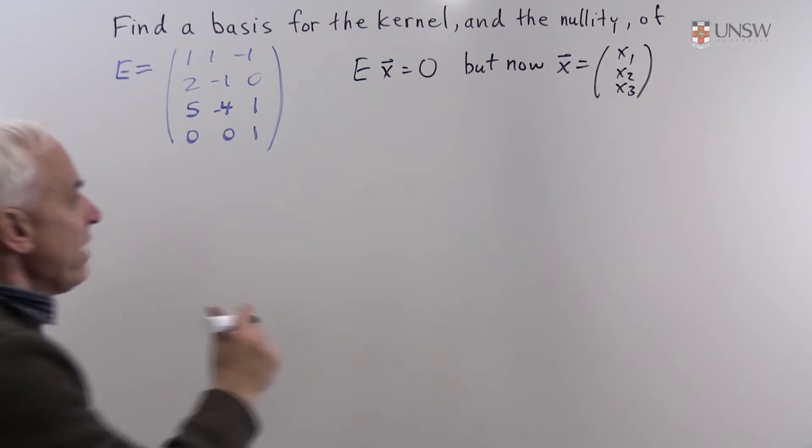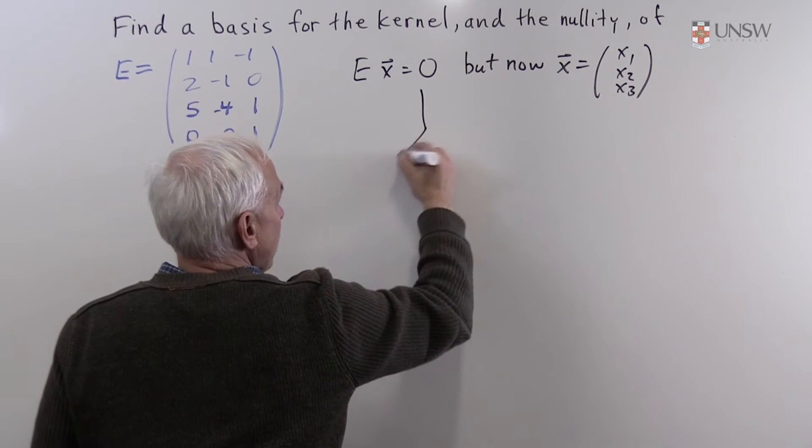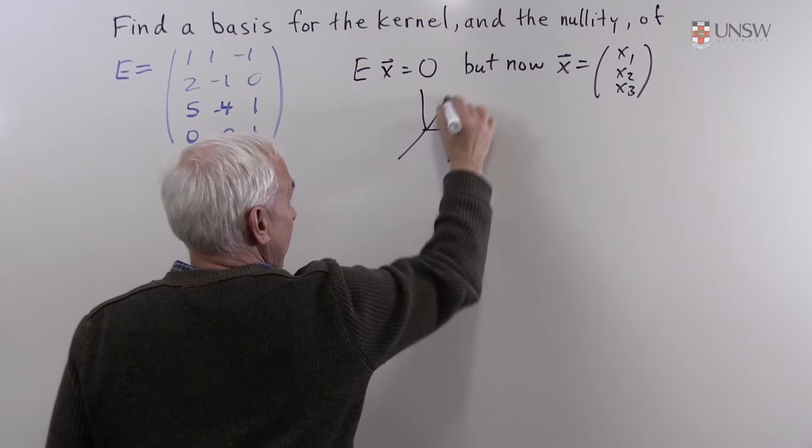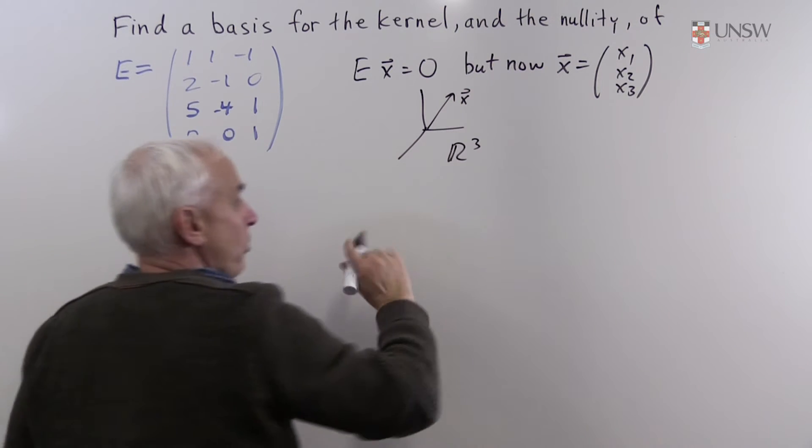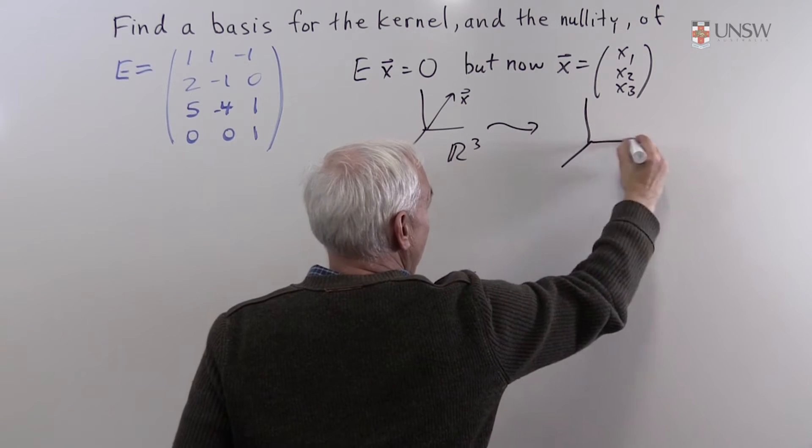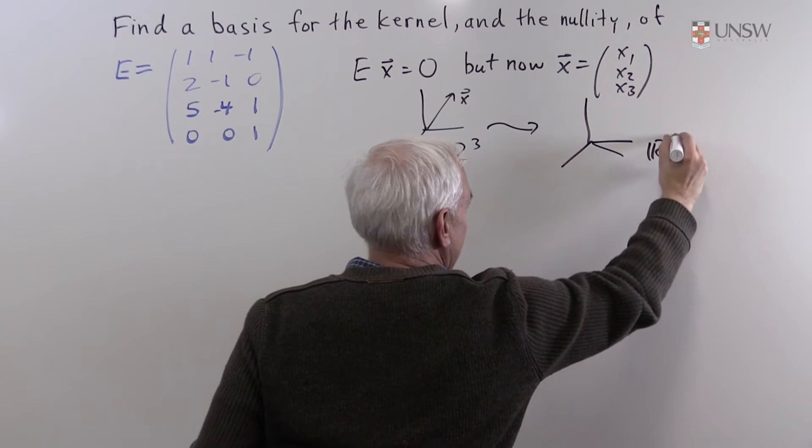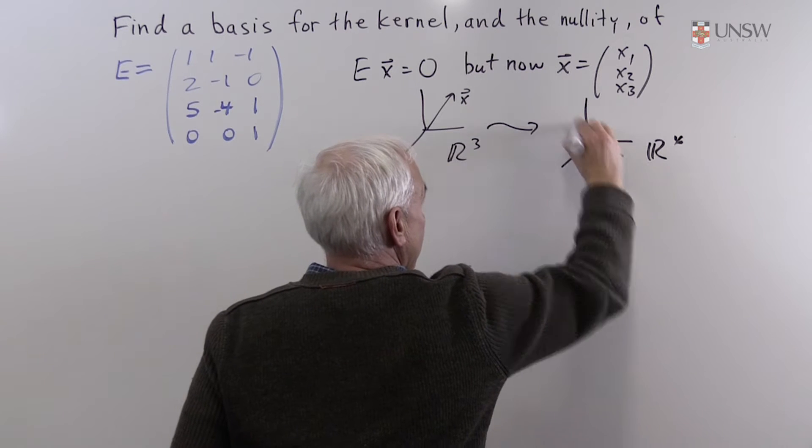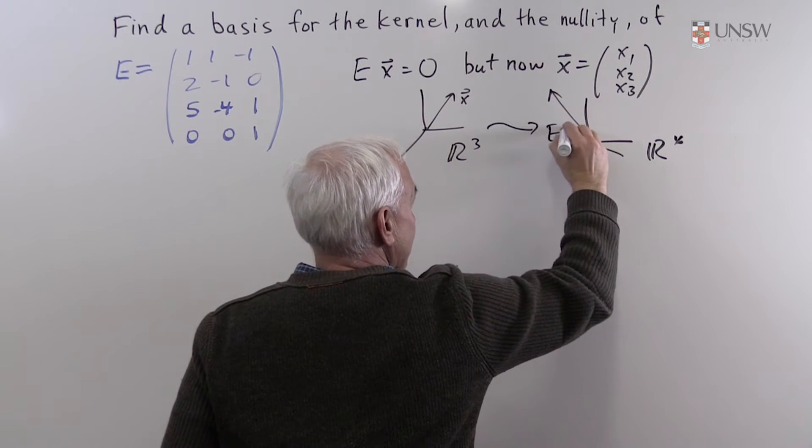The picture that you should have in mind is that now what we're doing is we're taking a vector in 3-dimensional space and we're multiplying it by E to give us a vector in 4-dimensional space. So this is E times X.